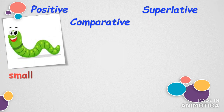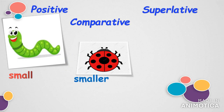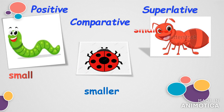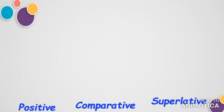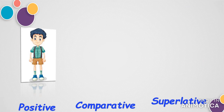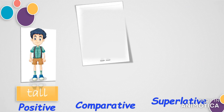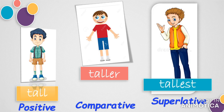Let's try to understand these three degrees with a few examples: small, smaller, smallest. Tall, taller, tallest. In these two sets of examples we have seen that the adjectives are changed into the comparative and superlative forms by adding 'er' or 'est'.